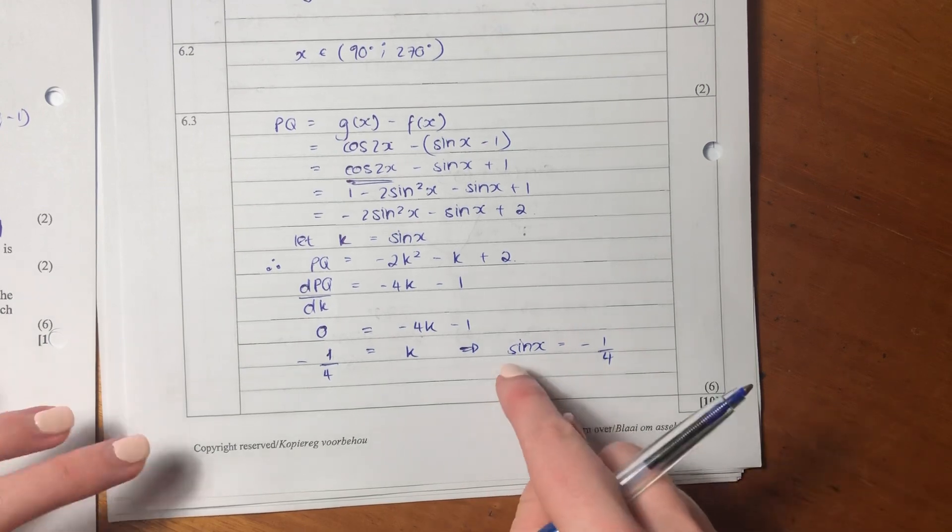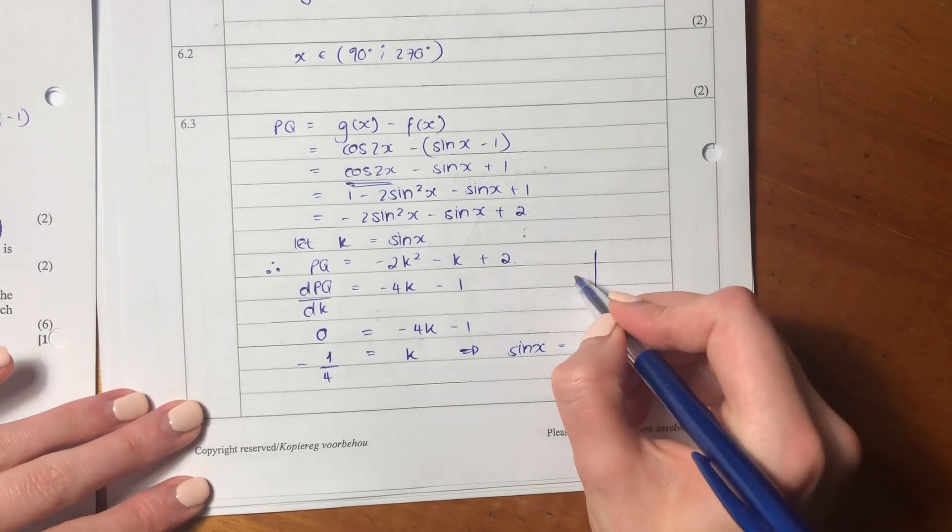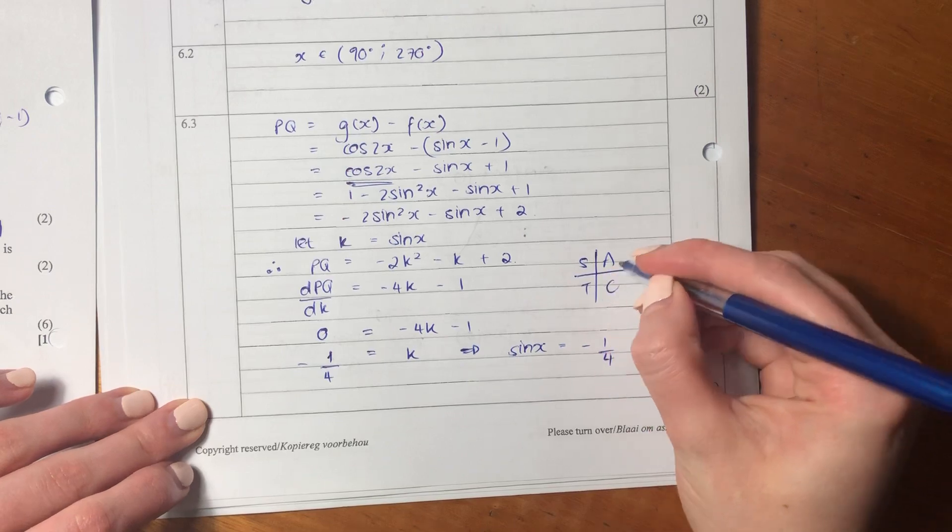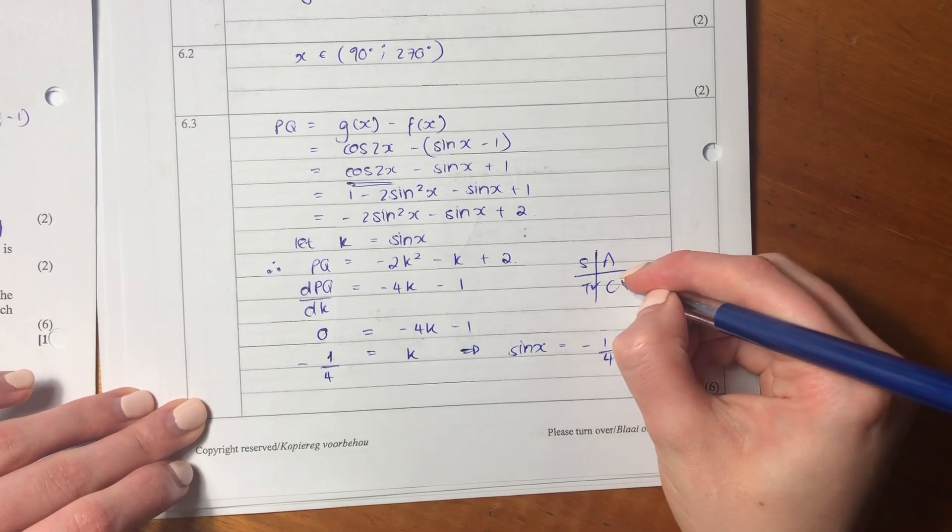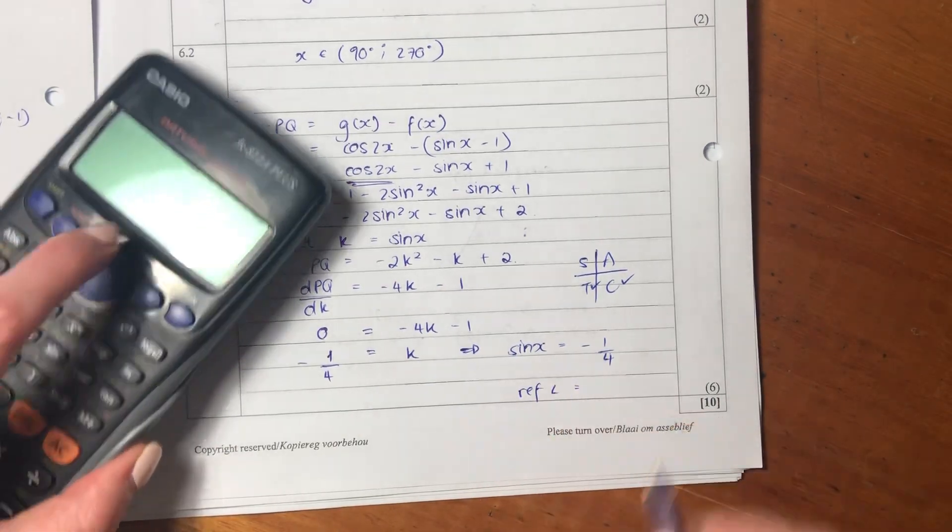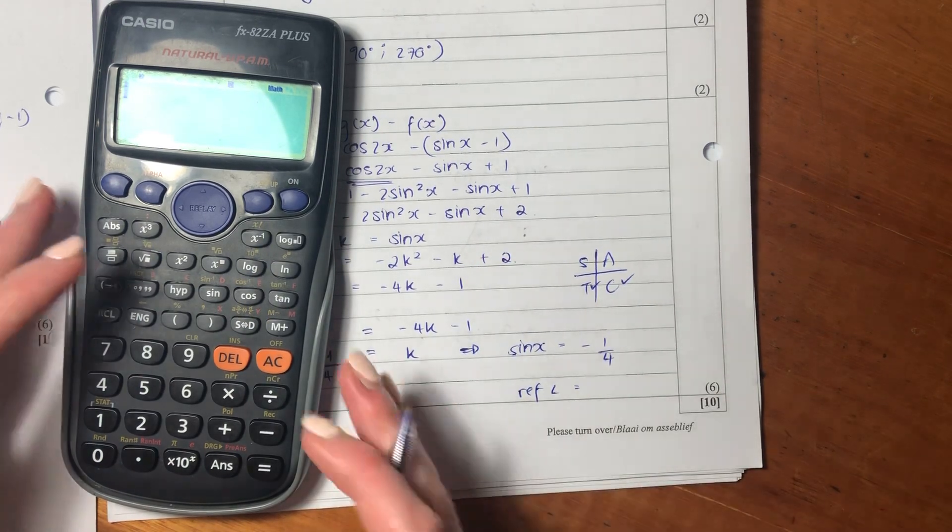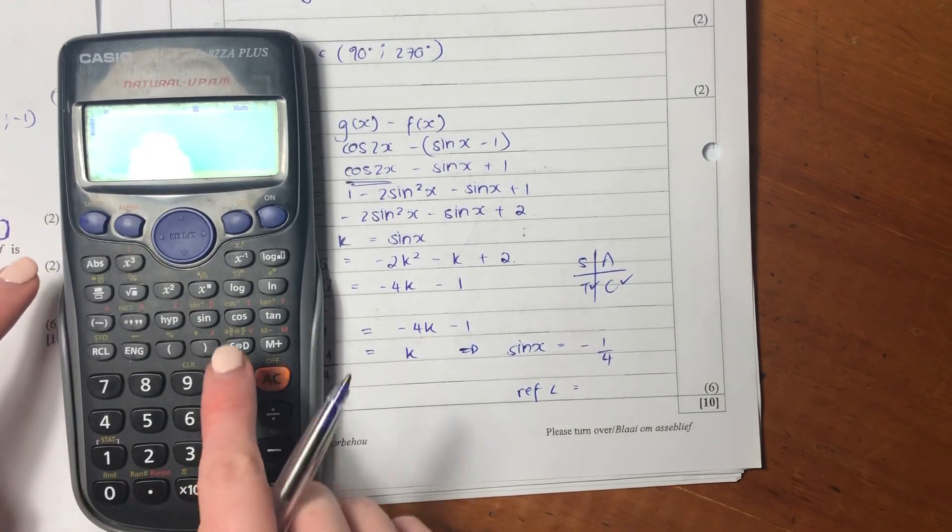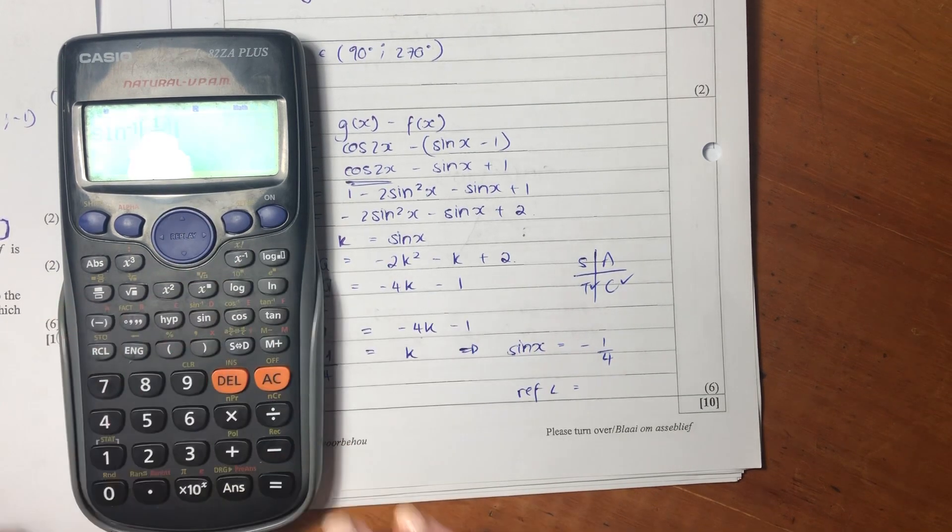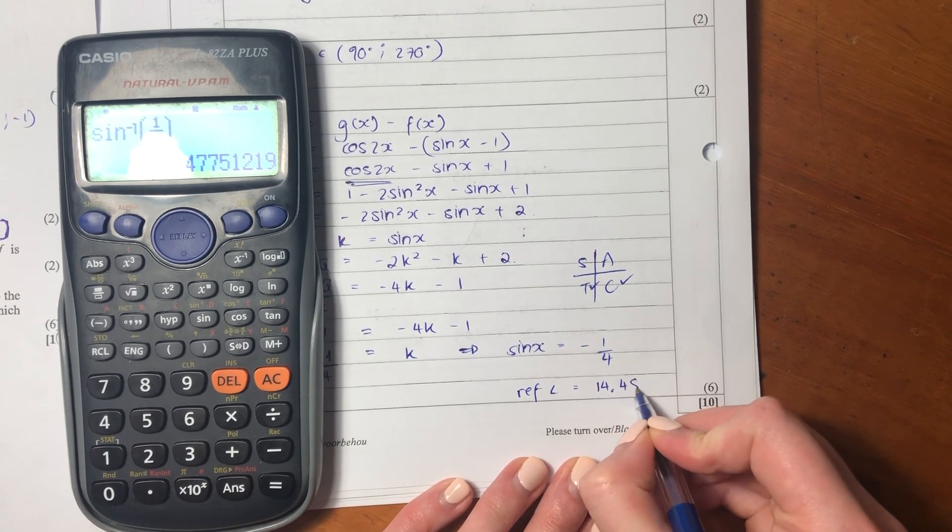So now we've got sin equals this negative quarter. Now let's remember, we're going to use cast. Very important. And where sin is negative is going to be the third and the fourth quadrant. So what we do is we get our reference angle. Remember, our reference angle is a positive acute angle, and then we apply it to the quadrant that is relevant. So we're going to say inverse function of sin 1 over 4. And then I'm going to get my reference angle is 14.48 degrees.